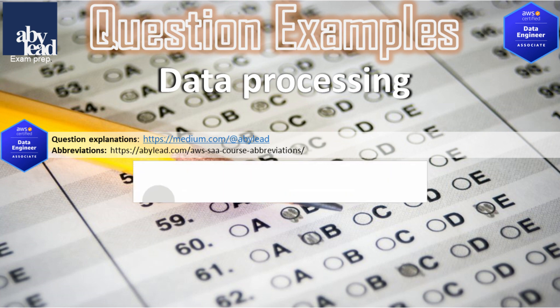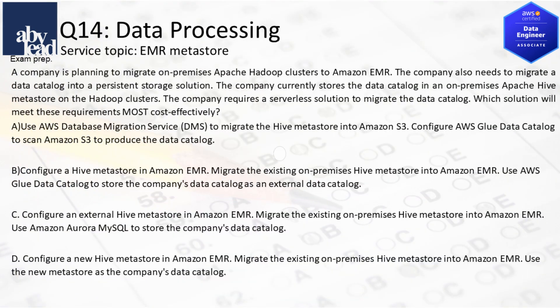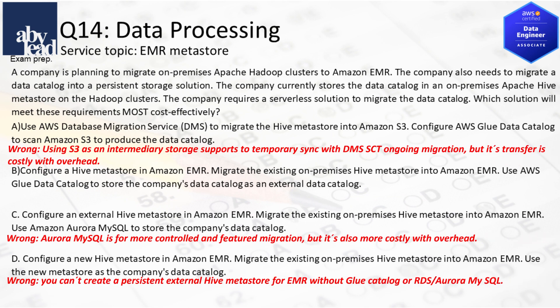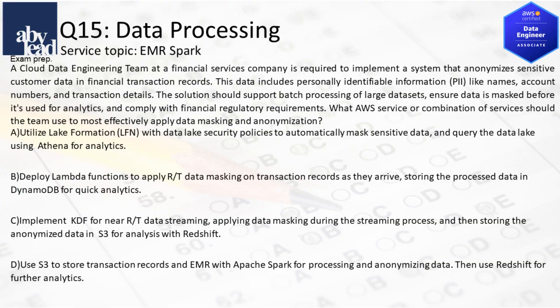Question 14: How do you cost-effectively migrate Hadoop clusters to EMR and a data catalog into persistent storage? DMS migration with temporary S3 or Aurora cataloging is costly and requires overhead. You can't create a persistent Hive metastore without a Glue catalog. The solution is to directly migrate to EMR Hive with a serverless Glue catalog.